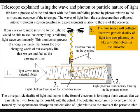The wave-particle duality of light and matter in the form of electrons is forming a blank canvas that we can interact with, forming the possible into the actual. The human eye will collapse the wave-particle duality of light into new photons, just like the atoms of any other object in the universe.